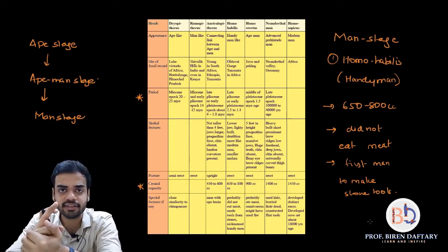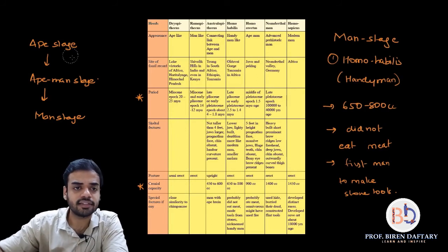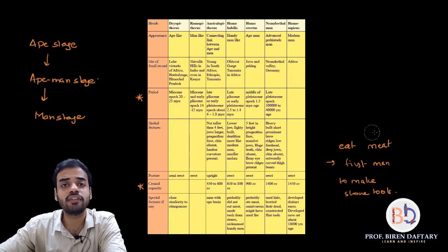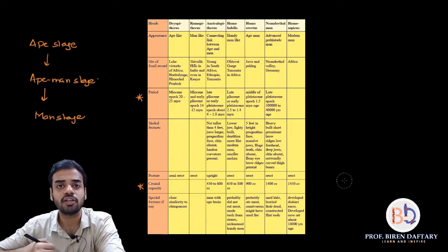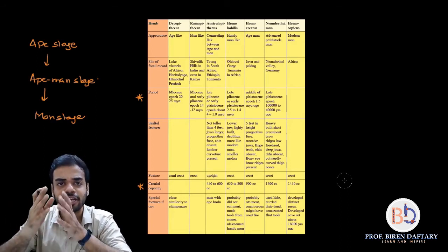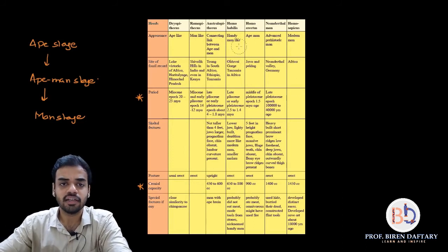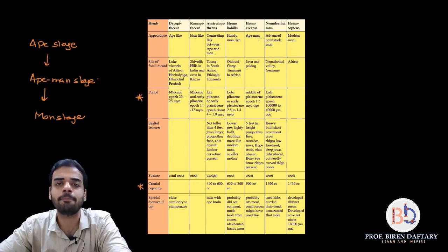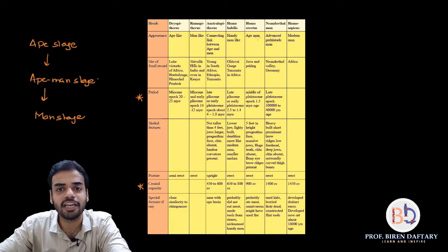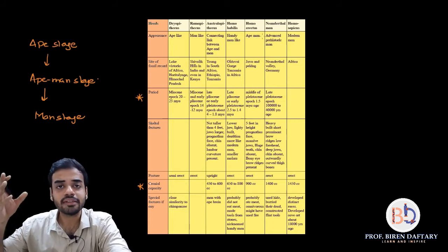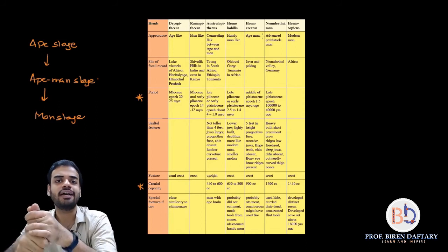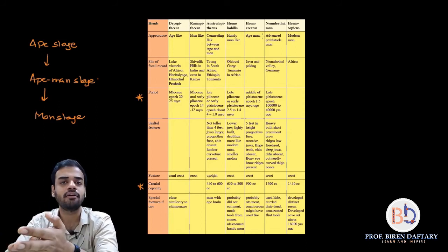The next stage is Homo erectus. From the name we can tell the posture was very erect — from this stage the spinal and walking posture became very erect. Homo erectus is divided into two types based on where fossils were found: Java Man (fossil found in Java) and Peking Man (fossil found in Peking, China).